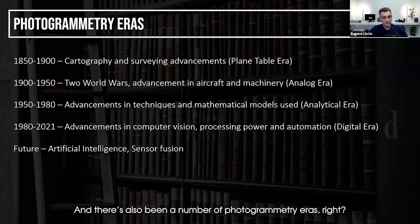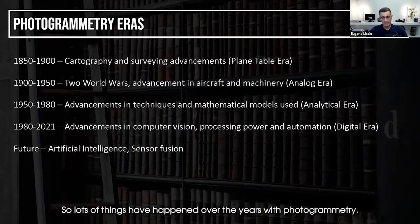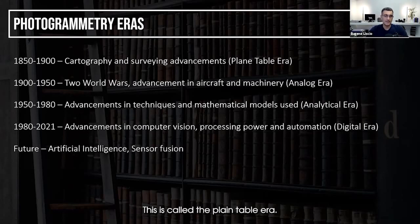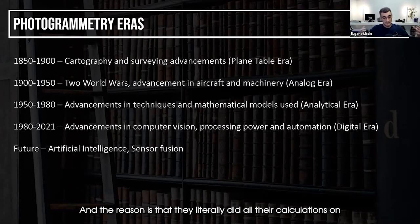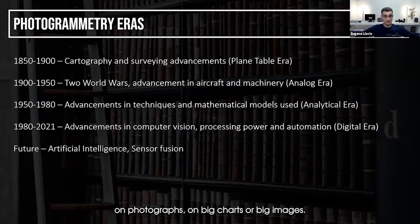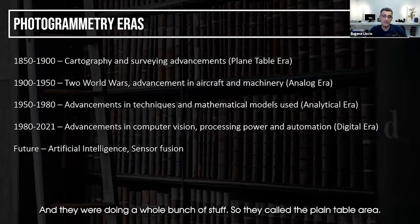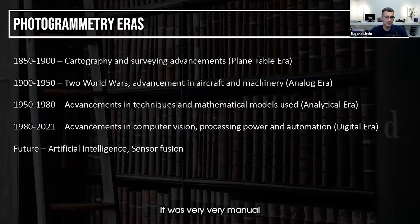There have been a number of photogrammetry eras. If we go back from 1850 to about 1900, this is called the plane table era. The reason is that they literally did all their calculations on photographs — on big charts or big images — drawing perspective lines and doing a whole bunch of stuff. It was very, very manual.